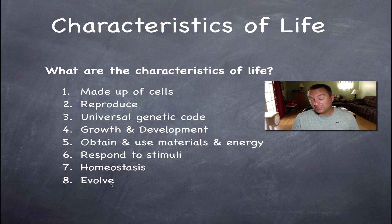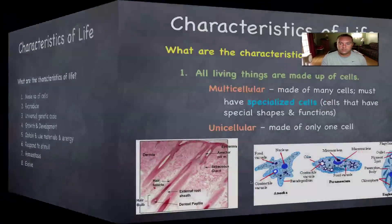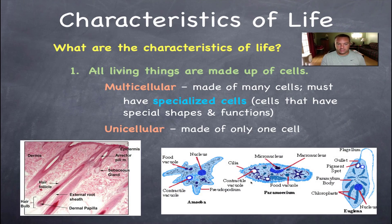Number seven, one of the most important concepts in biology, is homeostasis — basically your body's way of maintaining a constant internal environment, which makes the chemistry inside a cell work much better. And finally, over time, living things as a group — not as individuals — will evolve through natural selection.